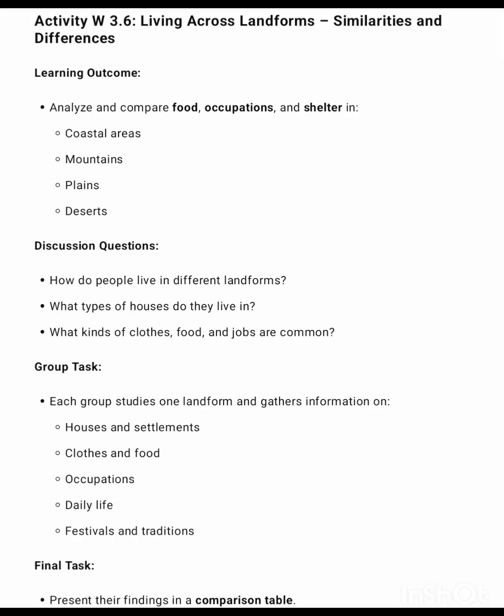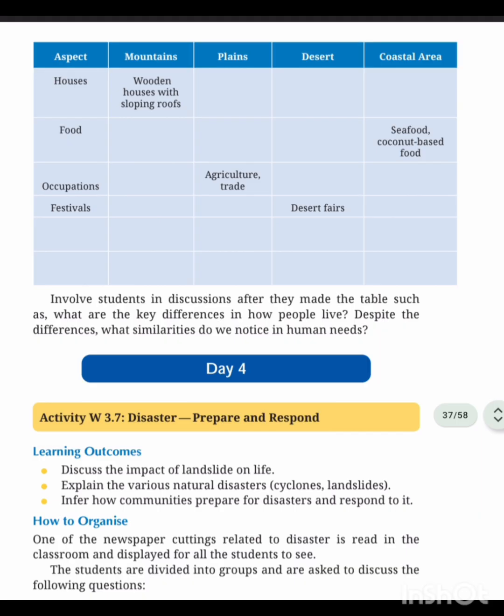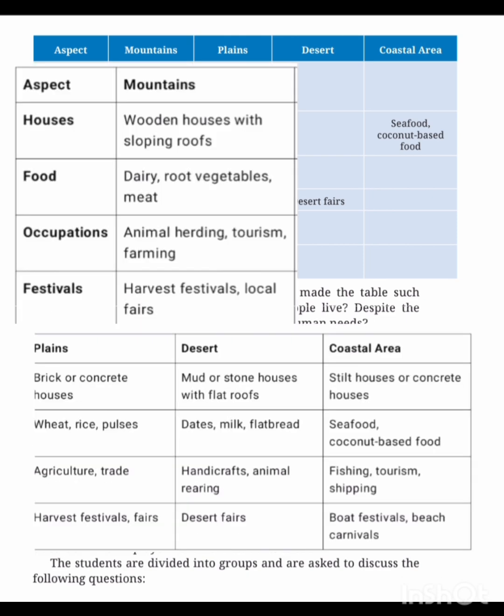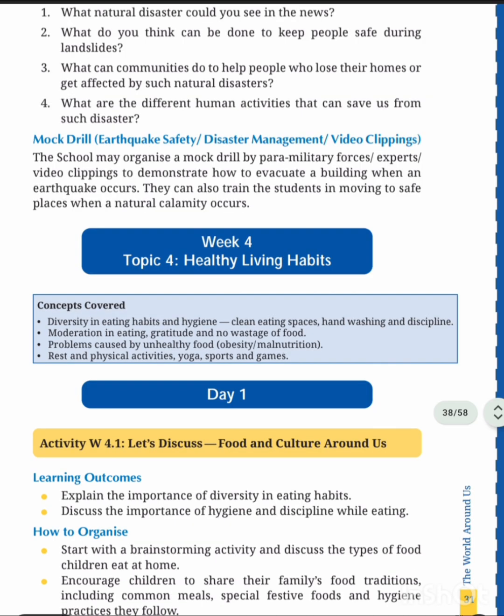Next is discussion questions, group tasks, and final task. The next page covers aspects — mountains, plains, desert — answers given: houses, food, occupation, festivals for mountains, plains, desert, and coastal areas, with different answers for each column. Week four: healthy and living habits.